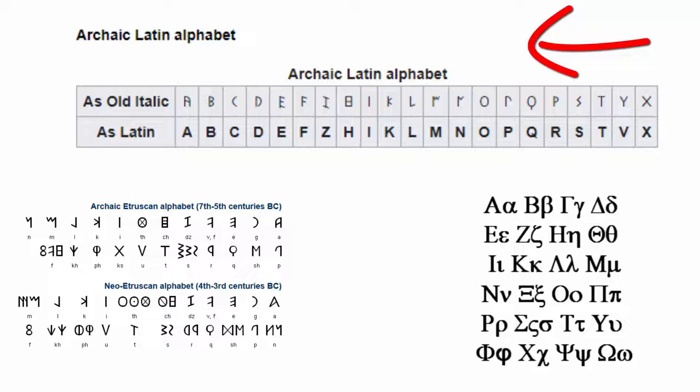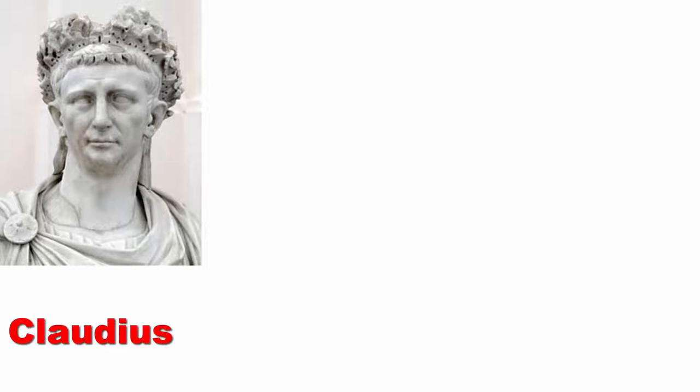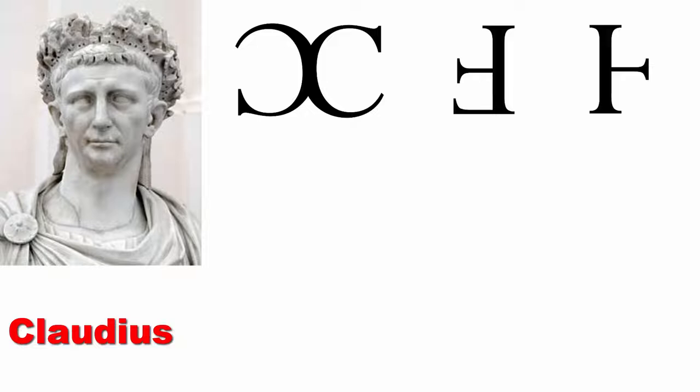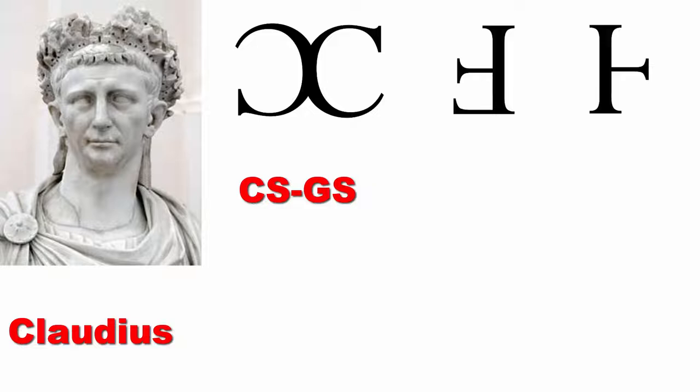During his reign, the 4th Roman Emperor, Claudius, wanted to add 3 more letters to the alphabet. The first letter he proposed was C with its reflection, thought to stand for CS and GS. The second was a turned F, thought to stand for V. The last one was half H, thought to stand for a short vowel sound, but its value is not entirely clear. These letters were used while he was alive, but when he died, they were abandoned.